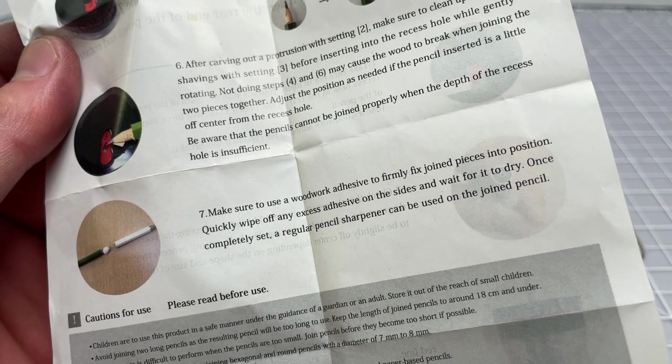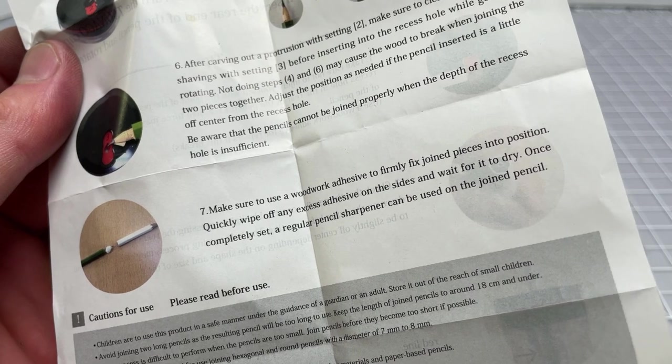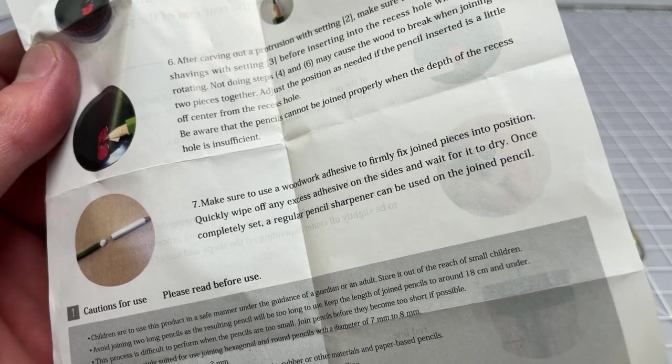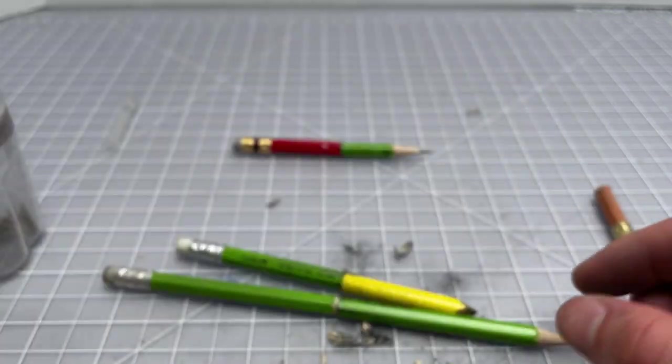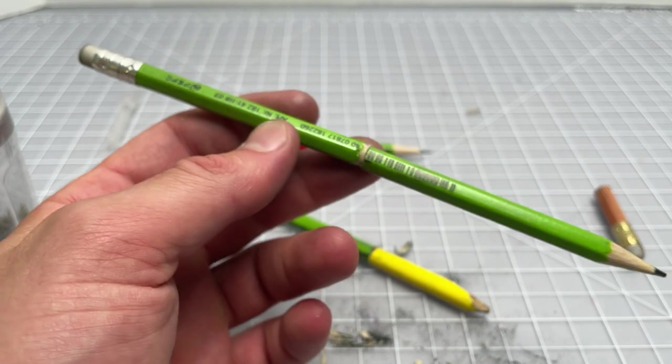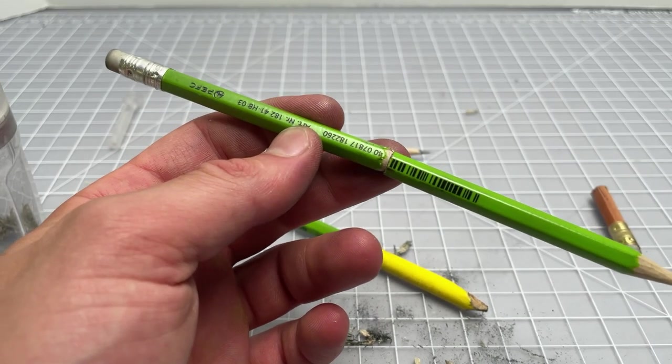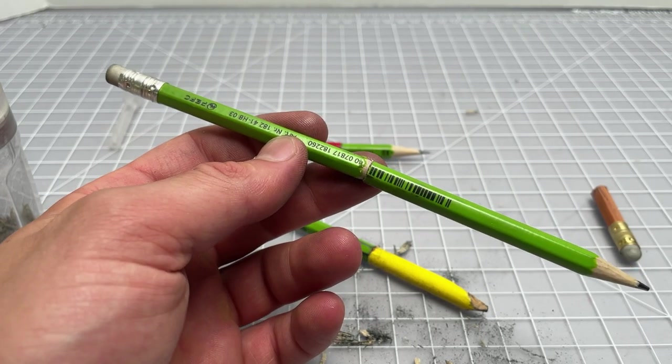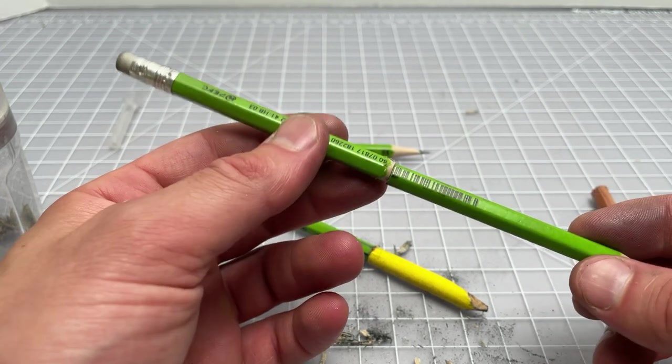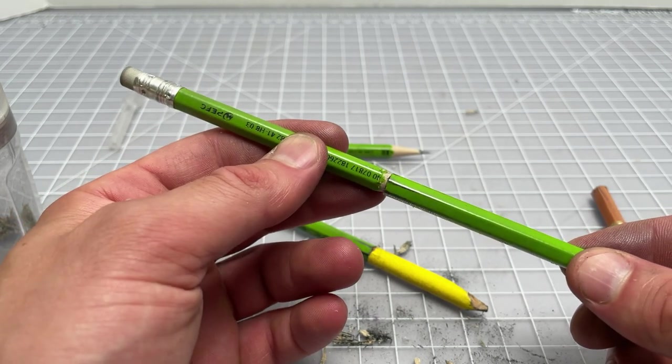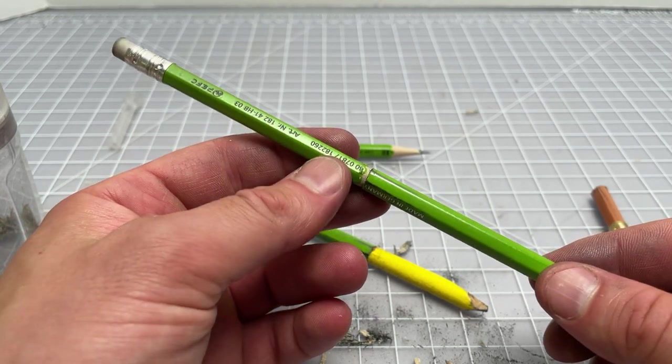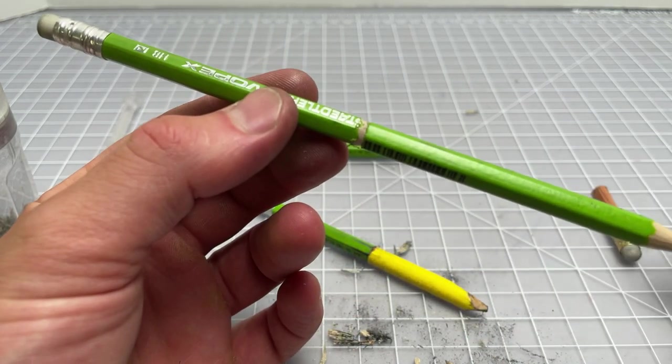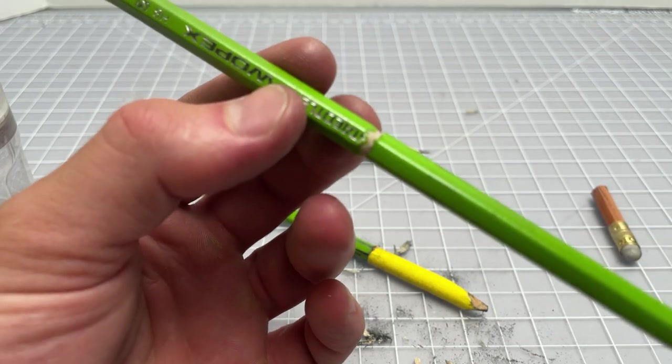For step seven, make sure to use a woodworking adhesive to firmly fix the joint pieces into position. And before I bought this I could never figure out how the two pieces were held together so well. I thought it was some sort of woodworking mastery from this expensive sharpener but it turns out that it's just wood glue holding it together. There's some friction here between the two pieces but really it's just the wood glue is doing the heavy lifting which I find to be really disappointing. So here's the end result, with wood glue it'll look just like this.